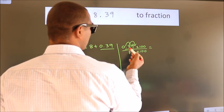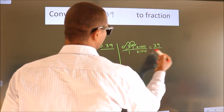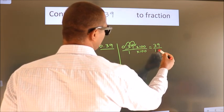Next, 0.39 into 100 is 39. 1 into 100 is 100.